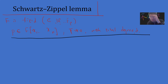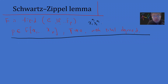Total degree d means the following: if you have a monomial x1^m1 * x2^m2 * ... * xn^mn, then total degree is m1 + m2 + ... + mn. So total degree d means the largest degree over all monomial terms in the expansion.